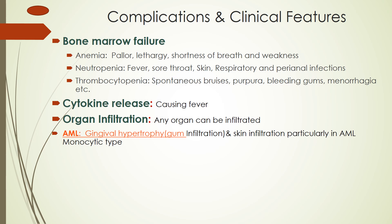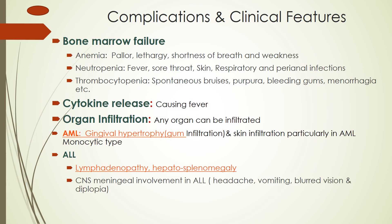In ALL, lymphoblasts invade the lymph nodes, liver, and spleen, causing lymphadenopathy and hepatosplenomegaly. Lymphoblasts may infiltrate the meninges of the central nervous system, causing headache, vomiting, blurred vision, diplopia, and a rise in intracranial pressure. Lymphoblasts may also enter the scrotum in males, causing scrotal involvement. In other patients, the mediastinal lymph nodes may also be involved, and the mediastinum appears widened on chest X-ray.